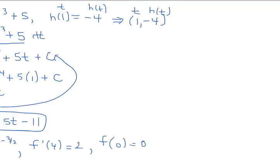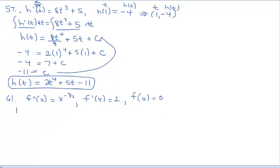Let's take a look at our final example — number 61 on page 256. Again, the objective is to solve the differential equation. You might quickly notice that we don't have the first derivative; we have the second derivative. So to solve the derivative equation means to go back twice to the original function. Notice the notation right here, and the change in notation compared to the first two examples. This is the second derivative.